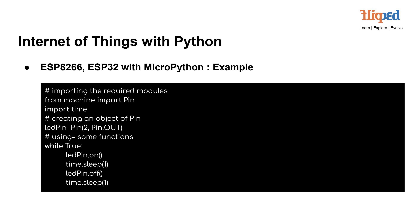The code enters a while True loop, meaning the following actions will be repeated indefinitely. Inside the loop, the code calls led_pin.on() to turn on the LED connected to the GPIO pin. After turning the LED on, the code uses time.sleep(1) to introduce a 1-second delay, so the LED remains on for 1 second. The code then calls led_pin.off() to turn off the LED, followed by another time.sleep(1) delay, making the LED remain off for 1 second. The loop continues this pattern indefinitely, resulting in the LED blinking on and off at a 1-second interval.